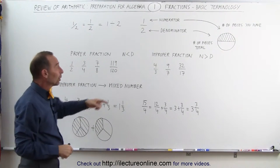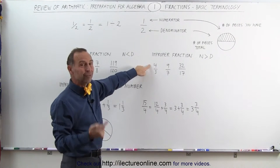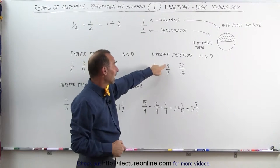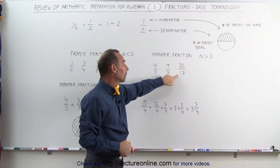An improper fraction is where the number at the top, the numerator, is bigger than the denominator. 4 divided by 3, 9 divided by 7, 32 divided by 17.